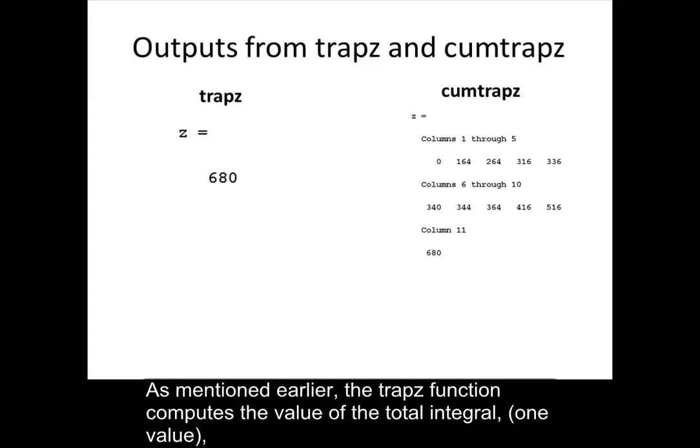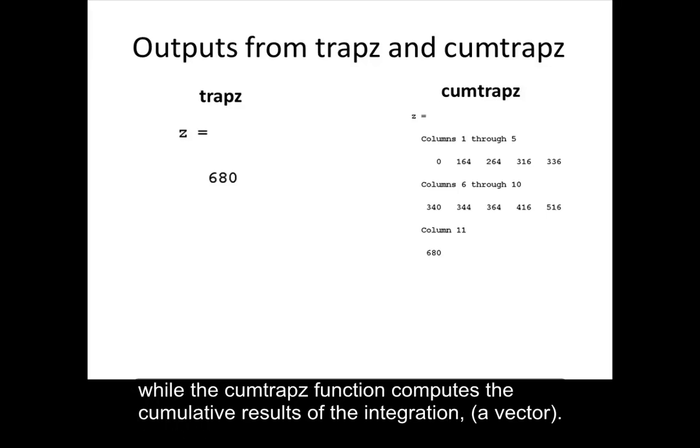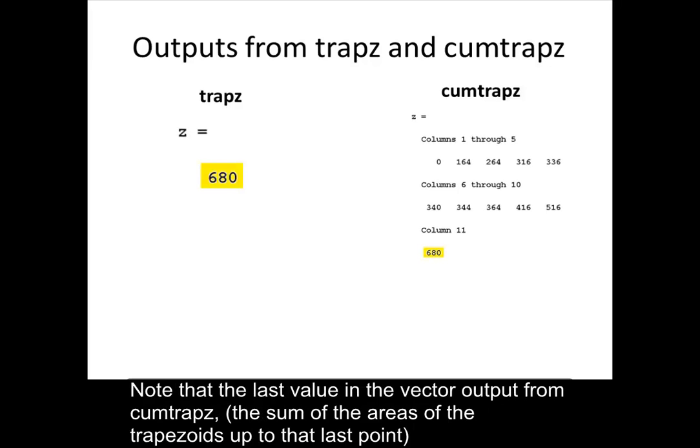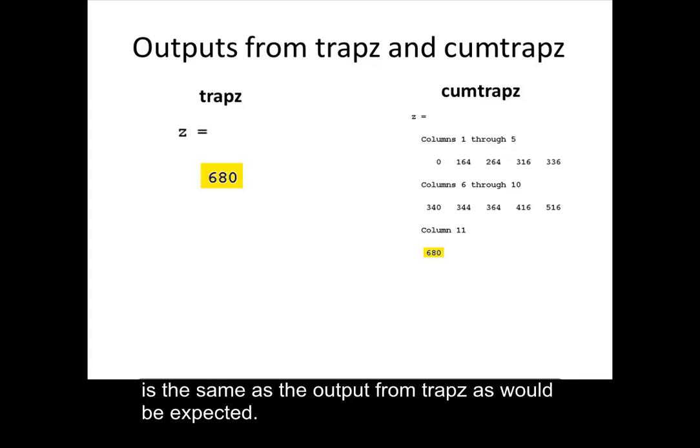As mentioned earlier, the trapz function computes the value of the total integral, one value, while the cumtrapz function computes the cumulative results of the integration, a vector. Note that the last value in the vector output from cumtrapz, the sum of the areas of the trapezoids up to that last point, is the same as the output from trapz as would be expected.